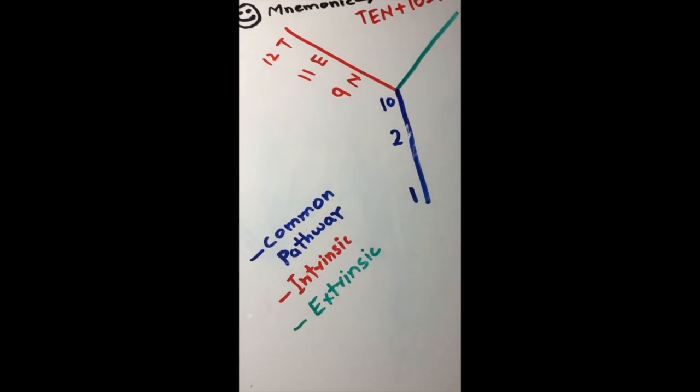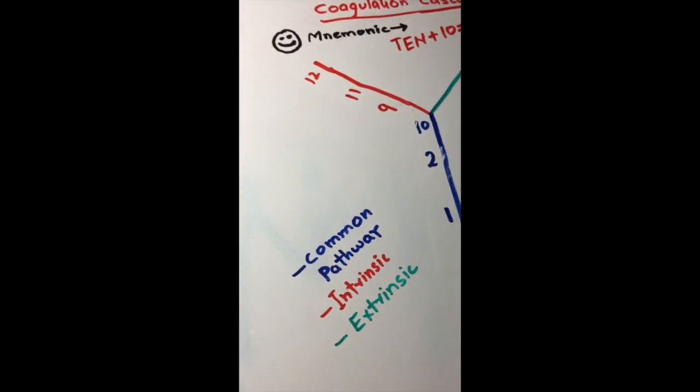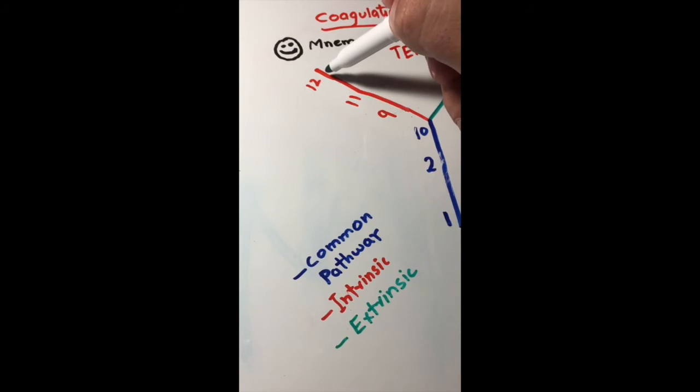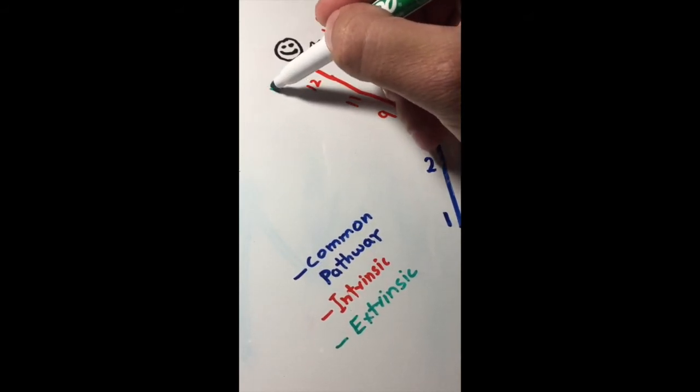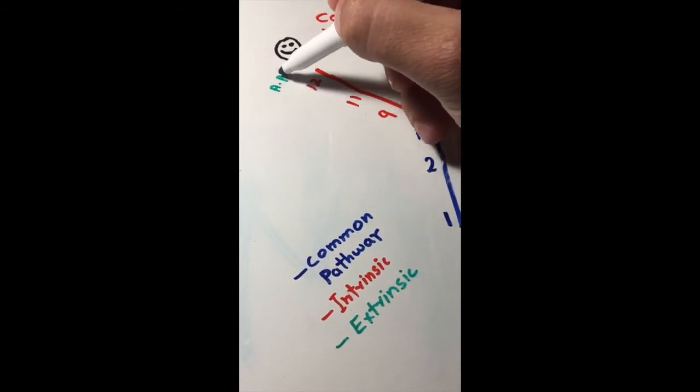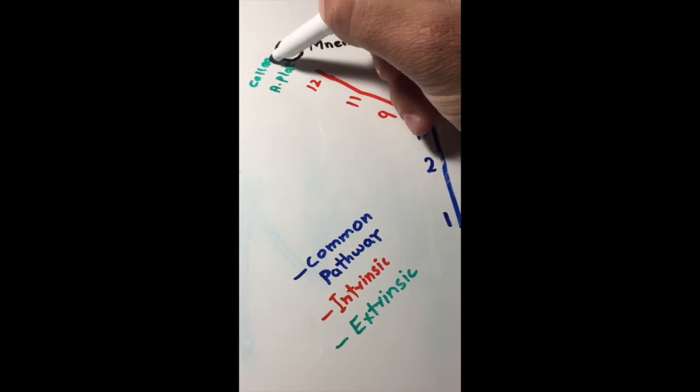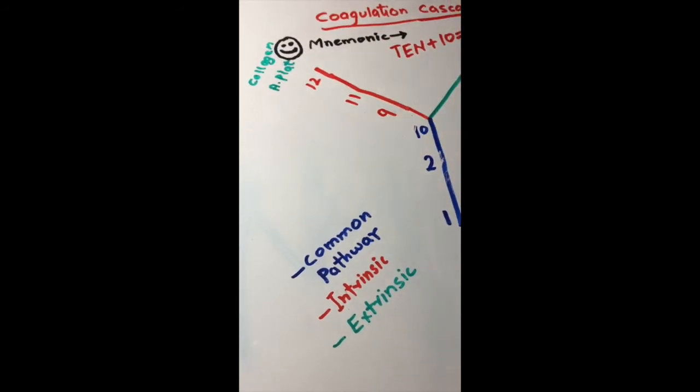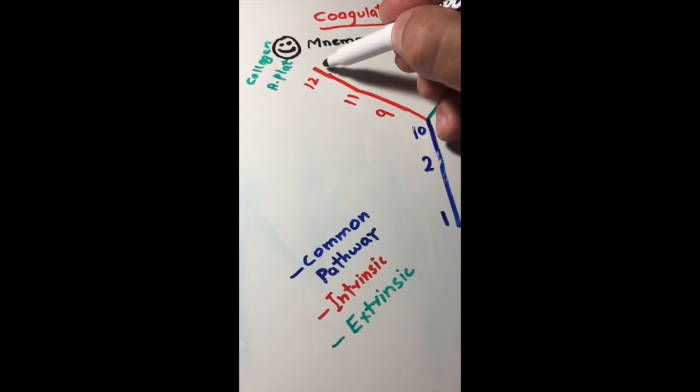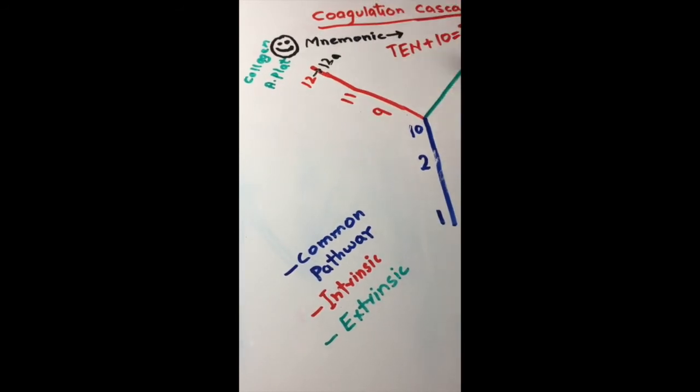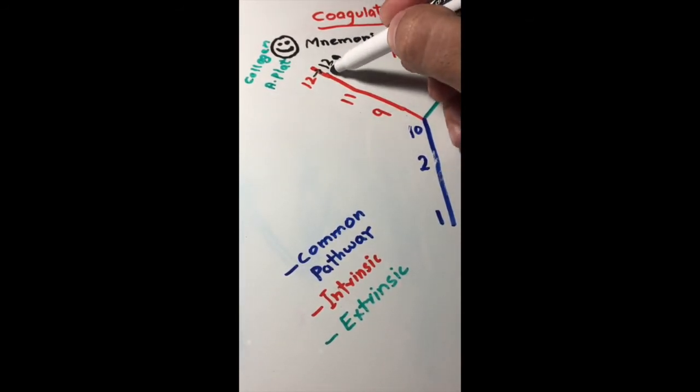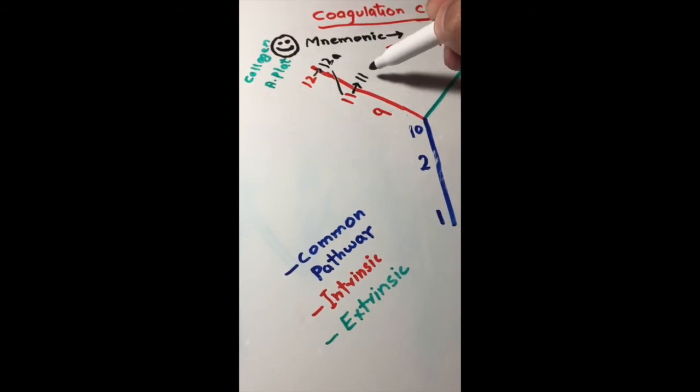Factor 12 is activated by activated platelets and collagen. 12 gets activated and gets converted into 12a—that's the active form. Then it helps 11 to get converted into 11a and helps 9 to get converted